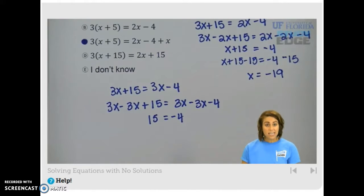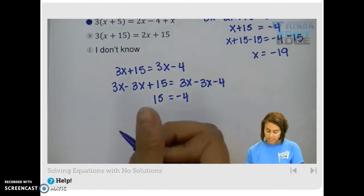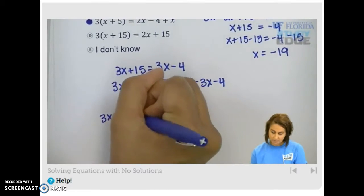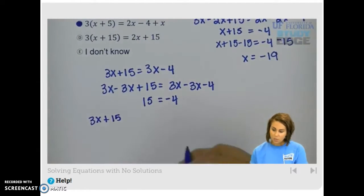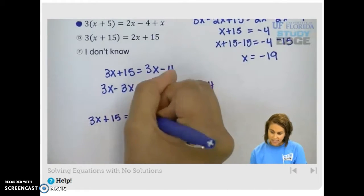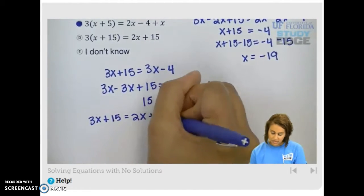So what about d? Well, let's see what the solution to d is. We have 3x plus 15 again, right? And we have 2x plus 15 on the right.